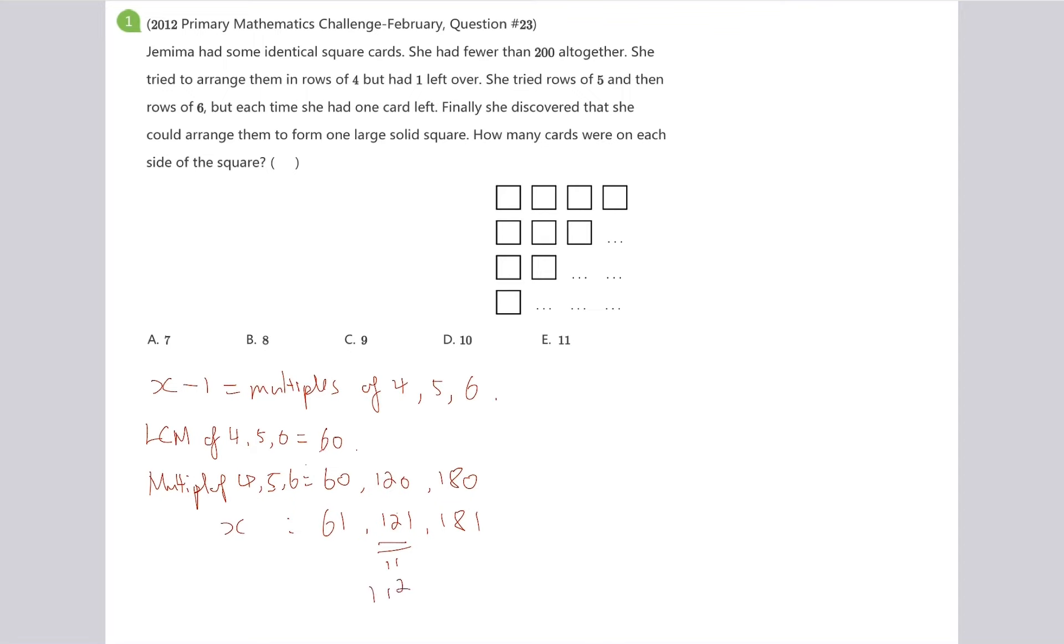So, therefore, the total number of identical square cards she has is 121. And the size of the square is just 11.